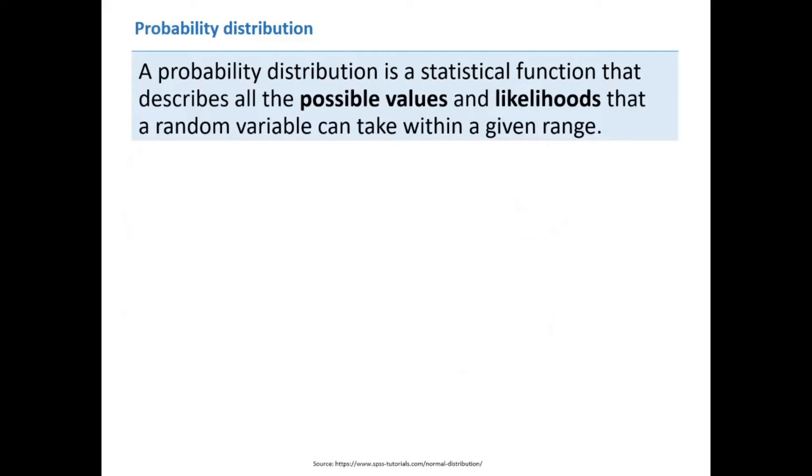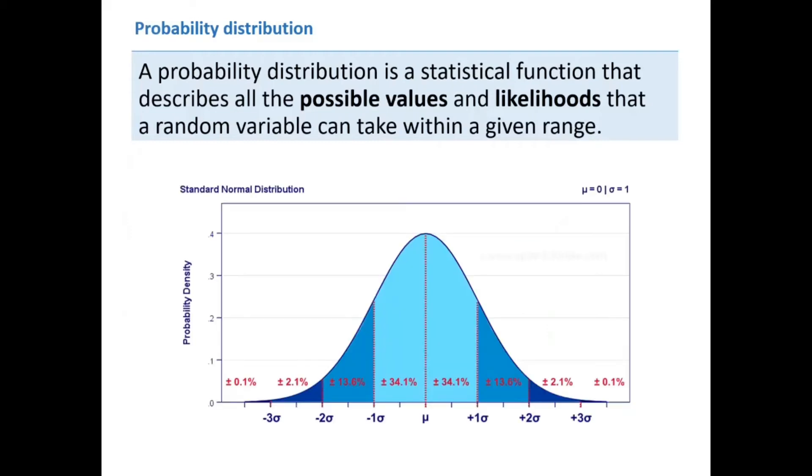A probability distribution is a statistical function that describes all the possible values and likelihoods that a random variable can take within a range. It comes in many shapes with different characteristics as defined by its parameters. For example, a Gaussian distribution with mean 0 and standard deviation 1 as shown here.